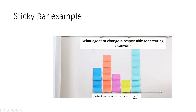The sticky bar strategy steps are listed if you're not familiar with it. For example, if students did a pre-assessment on 4.7 properties of soil and some pieces they've gotten but they're still unsure about retaining water, you could do a formative assessment after a mini lesson on that. You show a question — for instance, 'What agent of change is responsible for creating a canyon?' — and give multiple choice options: erosion, deposition, weathering, something different, or 'I don't know.' Students vote with a post-it note, and then together as a class you organize and discuss their thinking, which can impact your instruction for the next couple of days.